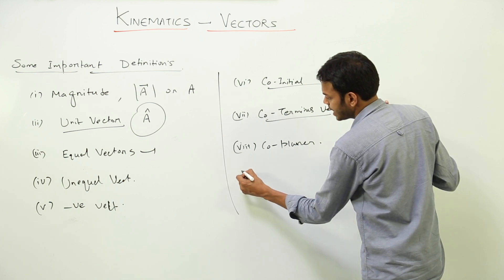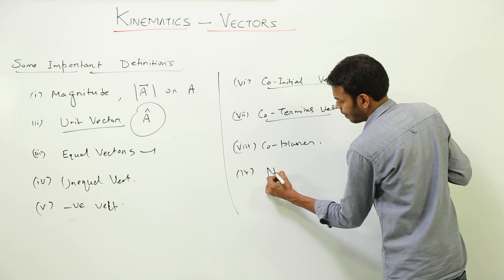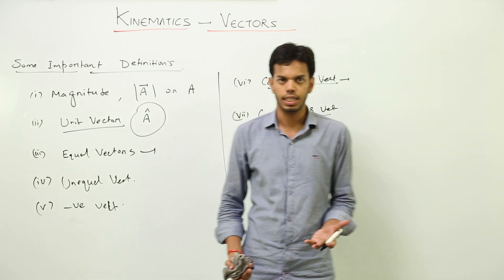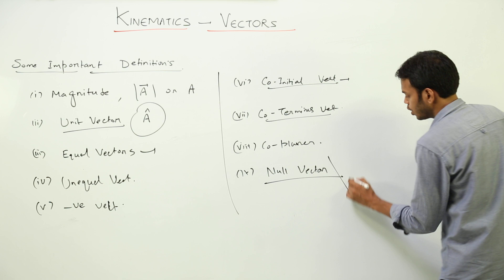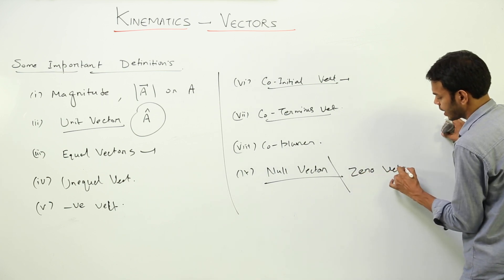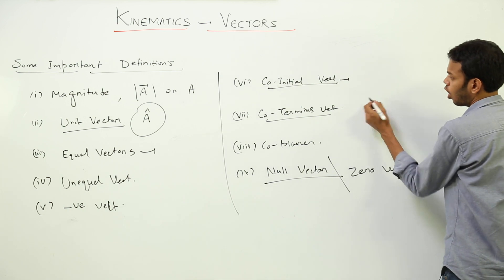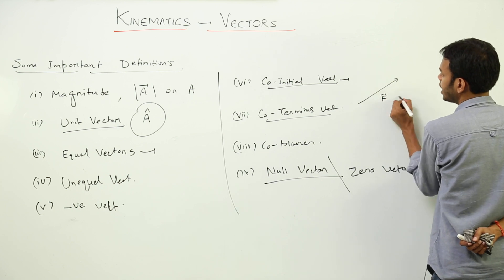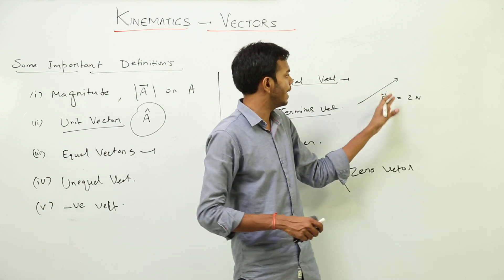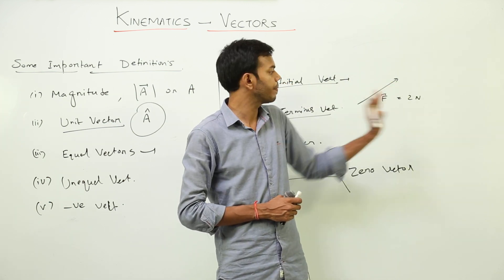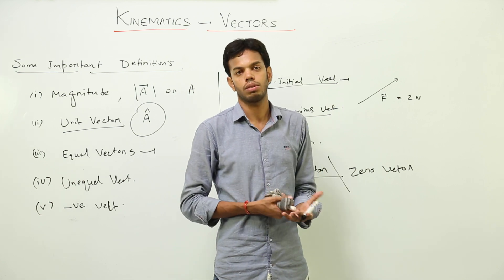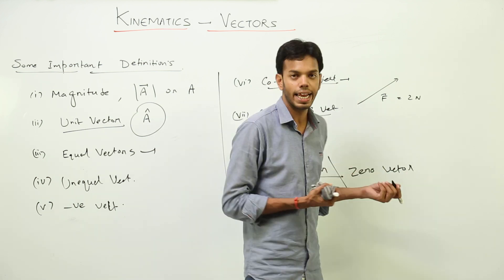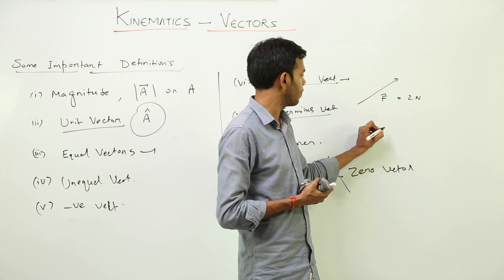The last term is null vector, which is actually a zero vector. Suppose I have to represent a force of two newtons in the north-east direction — I draw a vector for that. But if I have to represent a force of zero newtons, there is no direction because there is no magnitude, so I put a dot. That is the null vector.